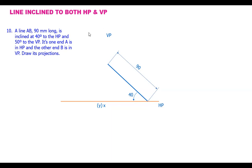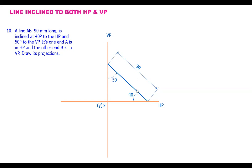If you have taken the vertical plane somewhere, we don't know whether it touches or not. For that, we do one thing: first draw only the horizontal plane and draw this line at 40 degrees, which is 90 mm. We know that point B is in the vertical plane. So, passing through this point, draw a perpendicular — a vertical line perpendicular to HP. This point will be in VP. One point is in HP, the other end is in VP. The angles here are 40 and 50, and the sum of these two angles is 90 degrees.